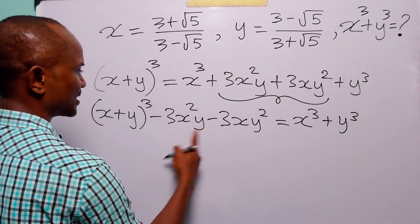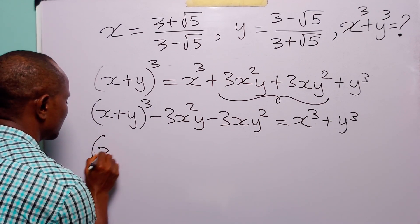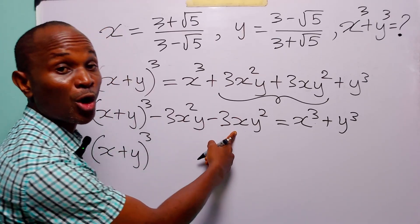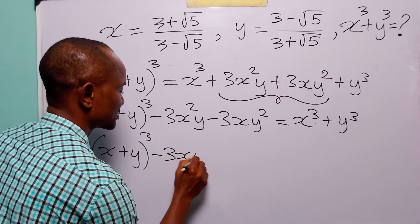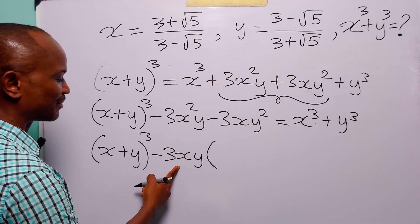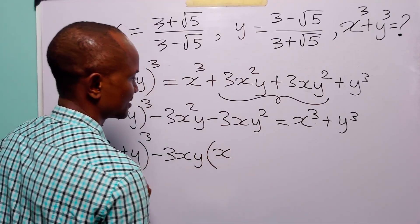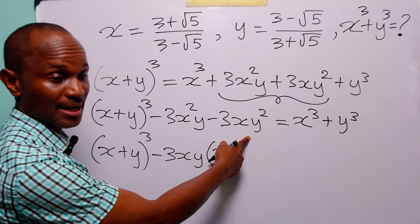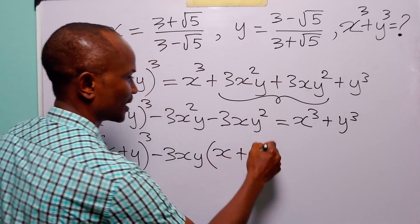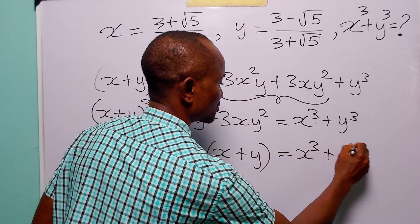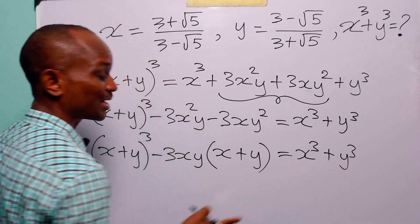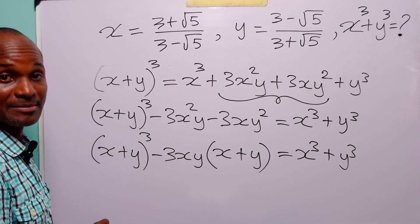Now let us further factorize this. We have x plus y cubed. Between these two terms, there is a common factor which is minus 3xy. Factoring that out gives us x plus y cubed minus 3xy times x plus y, and this is still equal to x cubed plus y cubed. So we now have an expression for x cubed plus y cubed in terms of x plus y and x times y.